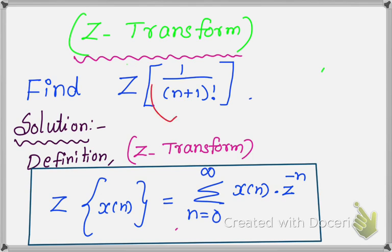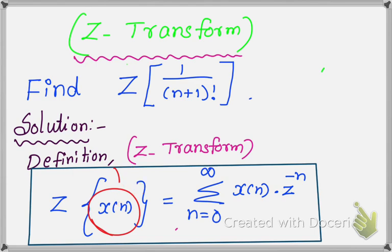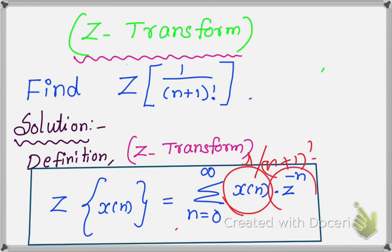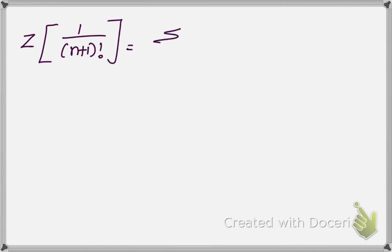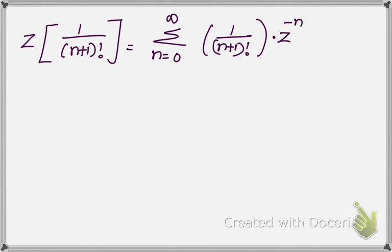Now we are going to find the value of 1 over (n+1) factorial. We apply this in place of X(n) in the definition, so the same term 1 over (n+1) factorial appears inside the summation. We get Z of 1 over (n+1) factorial equals summation from n=0 to infinity of 1 over (n+1) factorial times Z to the power of minus n.